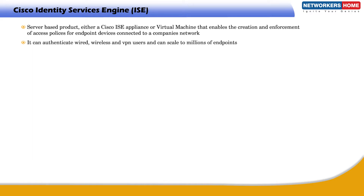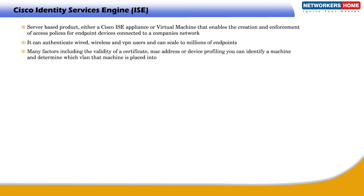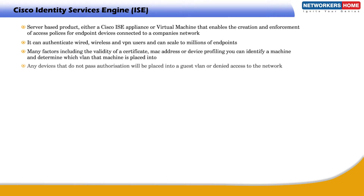It can authenticate wired, wireless, and VPN users and can scale to millions of endpoints. Based on many factors — including the validity of a certificate, MAC address, or device profiling — you can identify a machine and determine which VLAN that machine is placed into. Any devices that do not pass authorization will be placed into a guest VLAN or denied access to the network.